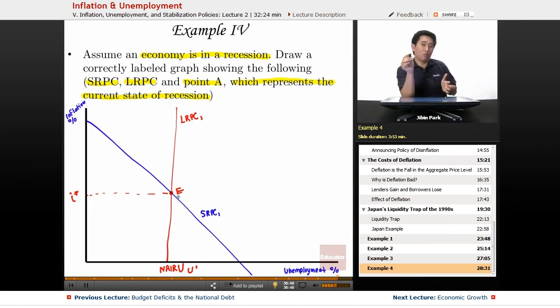Well, let's examine what each of them would indicate. So if you're on the left of the LRPC, what you're indicating is relatively higher inflation and lower unemployment, and that's more of an inflationary gap.